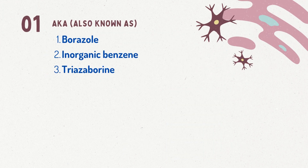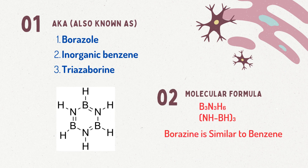Borazine, also known as borazole, inorganic benzene, or triazoborine. The molecular formula of borazine is B3N3H6, or (BHNH)₃, since it has three boron atoms, three nitrogen atoms, and six hydrogen atoms.